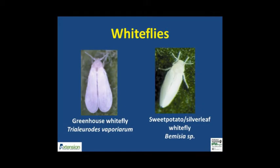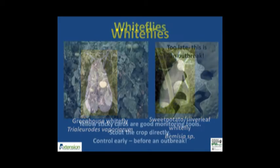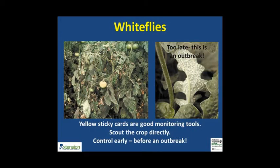Whiteflies are smaller insect pests compared to aphids and much more active greenhouse pests that spread quickly if uncontrolled. Greenhouse whiteflies are common pests with angular wings that hide most of the legs. Sweet potato and silverleaf whiteflies have wings held at an acute angle with most appendages sticking out from under the wings. Whitefly adults fly quickly and settle down on the underside of leaves. Silverleaf whiteflies can be difficult to control with insecticides. Whiteflies can be monitored with yellow sticky traps.